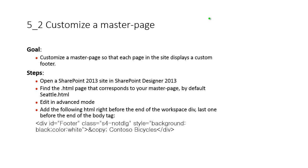Hi, I'm Peter Kamström of Kamström.com Business Solutions. In this demonstration I'll show you how to customize a master page in SharePoint 2013. We're going to customize the master page so that each page in the site displays a custom footer, which I have the HTML for down here. The steps are to open SharePoint 2013 in SharePoint Designer 2013 and then find the HTML page that corresponds to my master page, which in my case is the Seattle HTML.